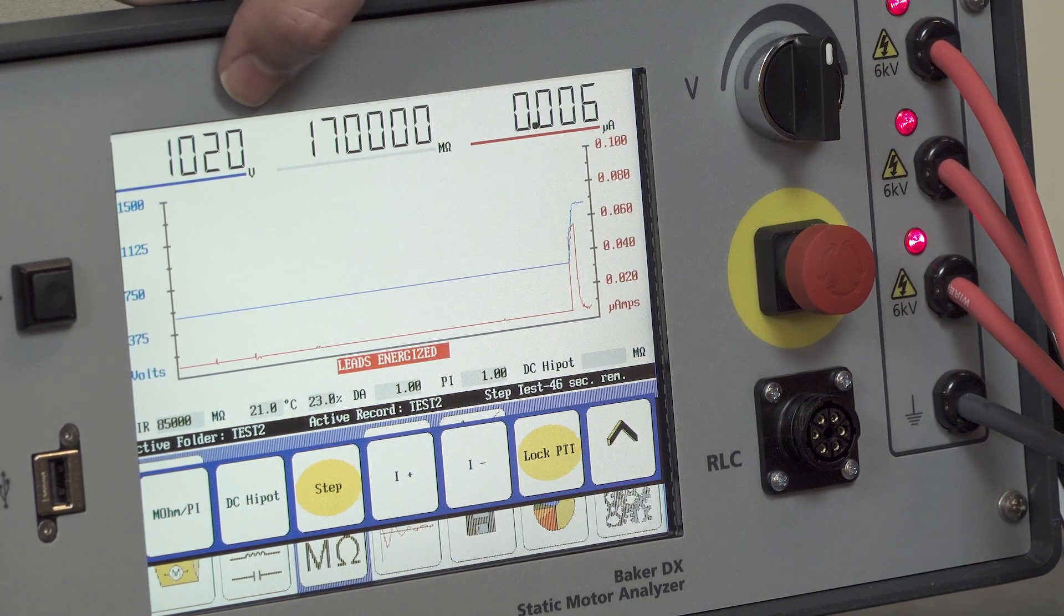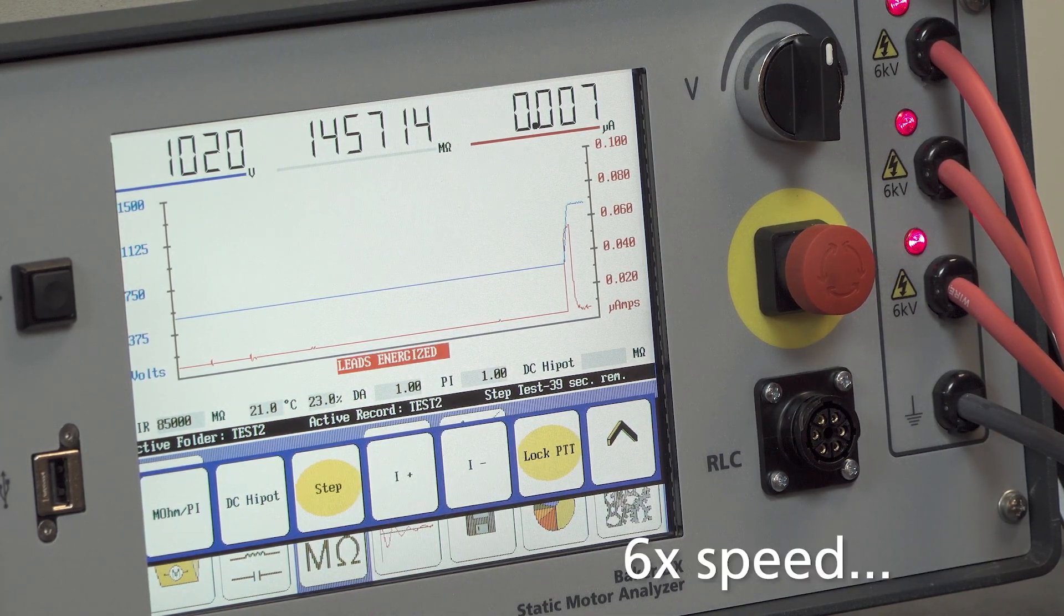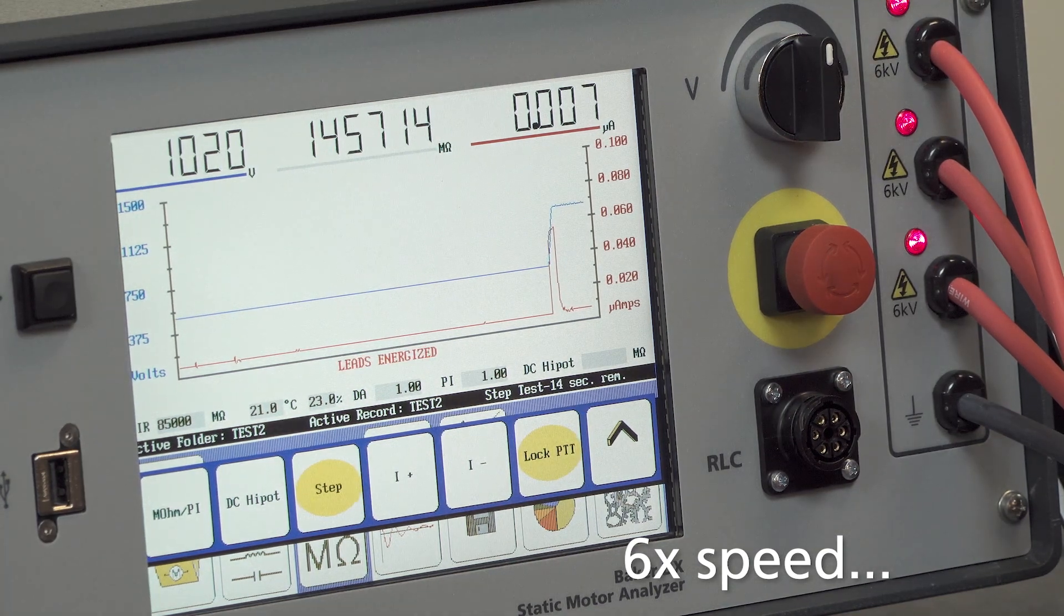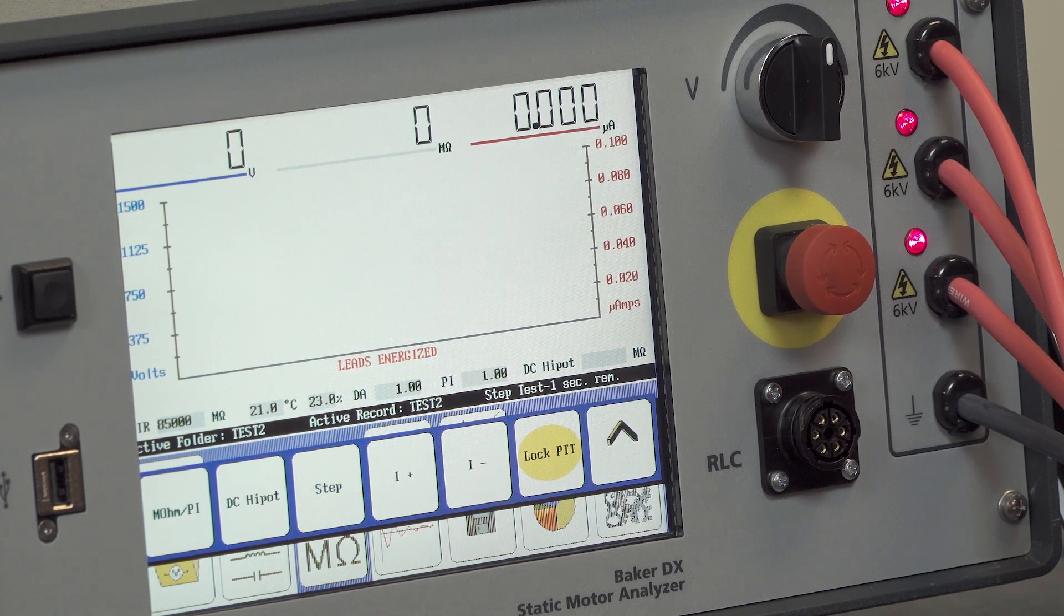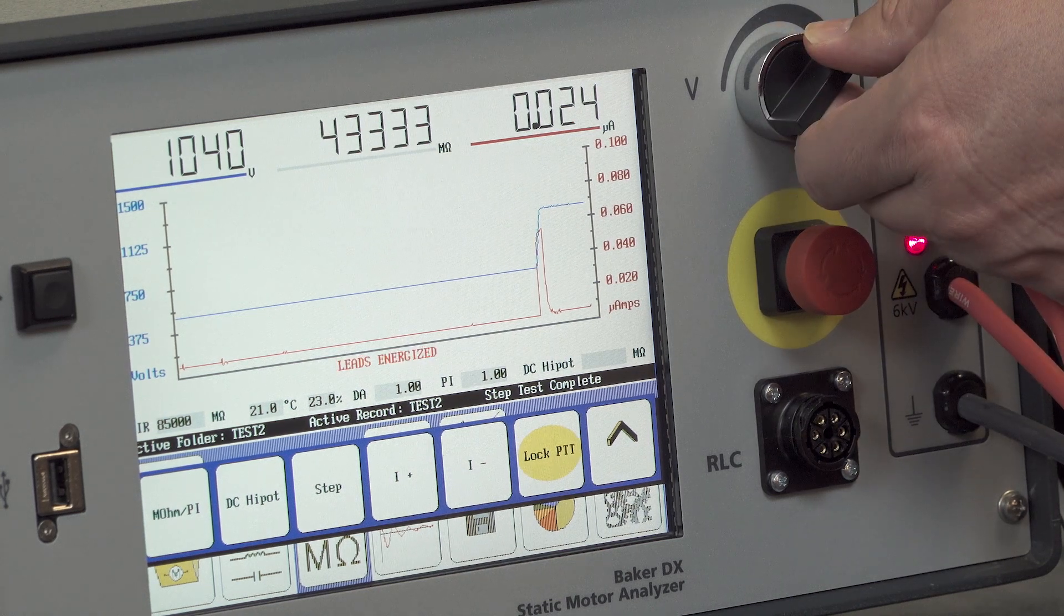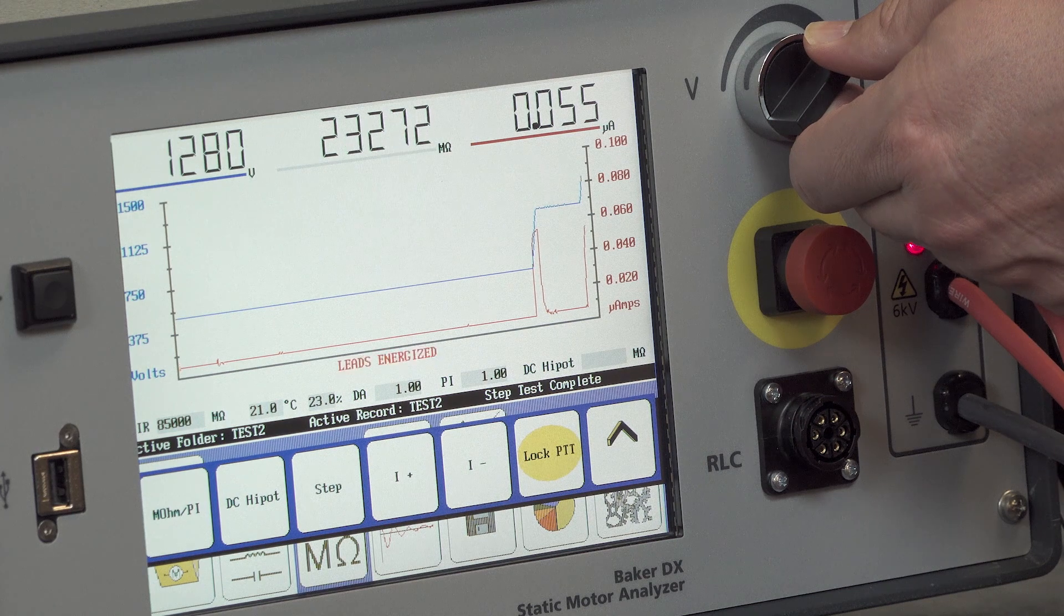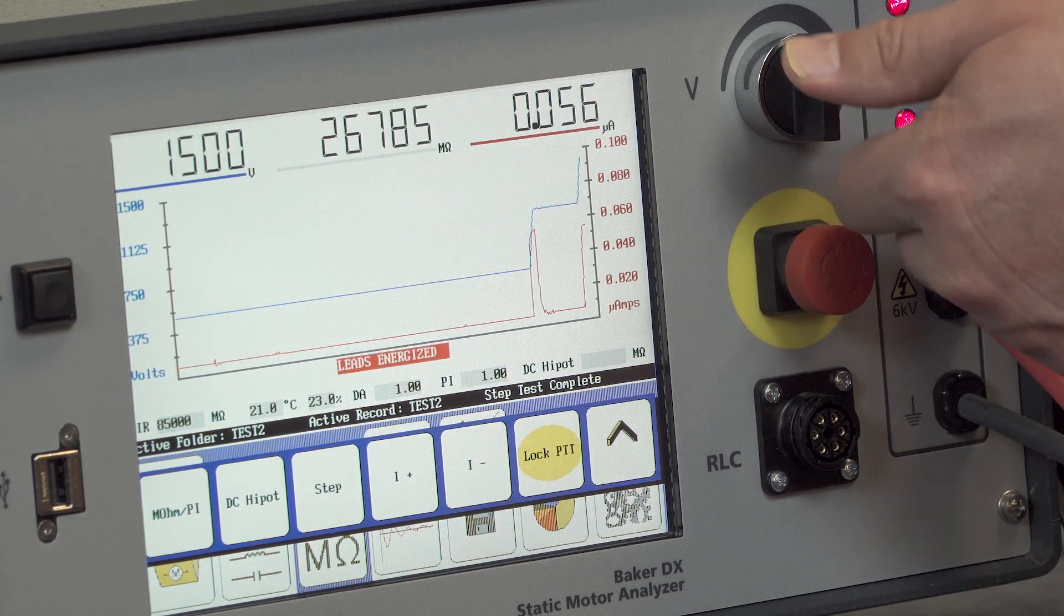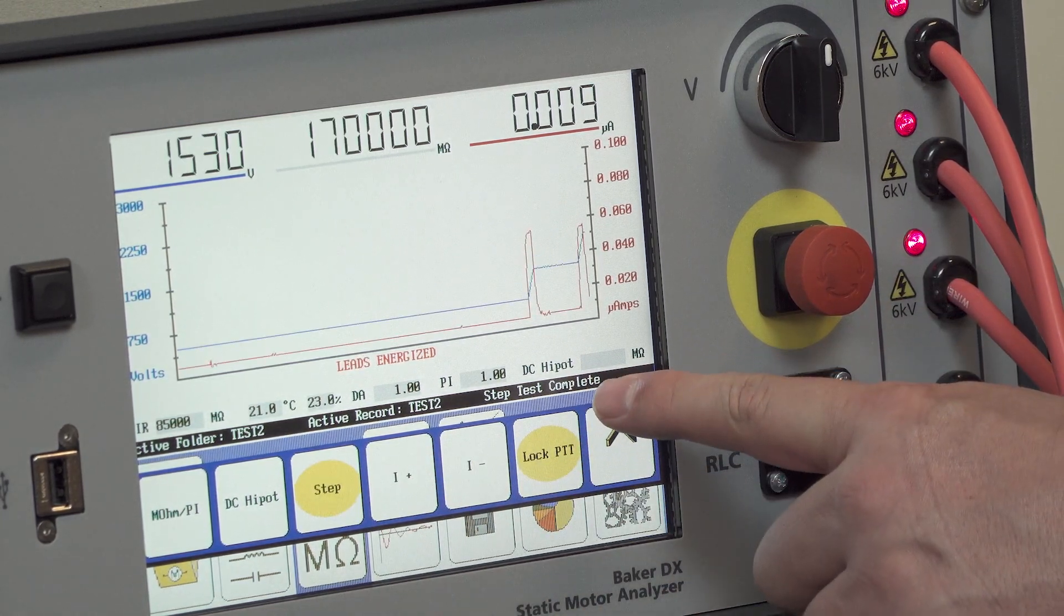And we'll perform the same steps again. Okay, now this is step test complete. I'm going to ramp to the next step which would be 1500 volts, watching the voltage here on the left. Okay, I'm going to achieve 1500 volts, I'll hit the step button again, restarting the step timer.